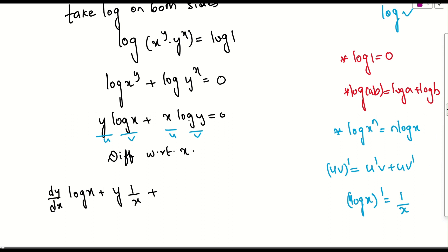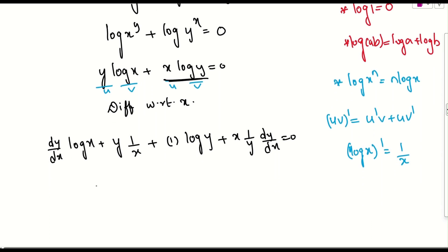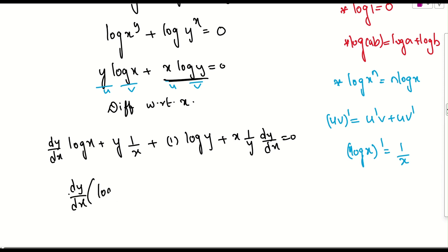For the second term, the derivative is 1 times log y as it is, plus x times 1 by y into dy/dx, and all of this equals 0. We want dy/dx, so taking dy/dx common, we get: dy/dx times (log x plus x by y) equals minus y by x minus log y.